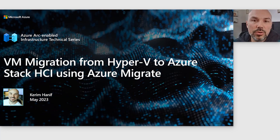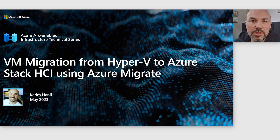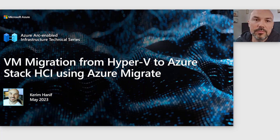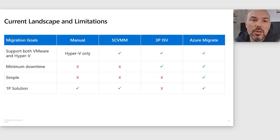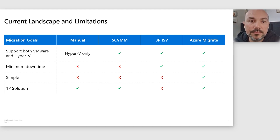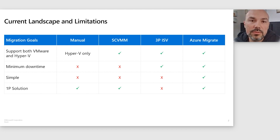This solution is currently in private preview and we are going to be shipping a public preview in coming months. When we were designing the migration solution, there were a couple of goals. One was that it would have to support VMware and Hyper-V, not just one or the other. It would have minimum downtime when migrating, and it would have to be a simple, first-party solution. Azure Migrate is the only one that satisfies all of them.